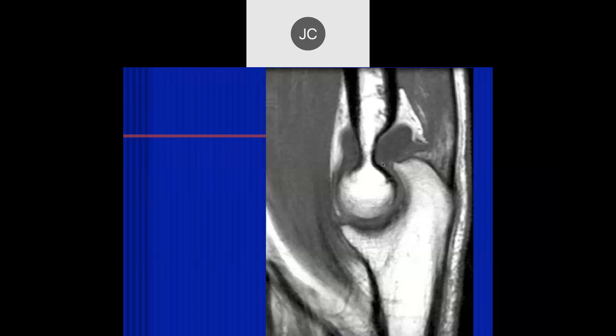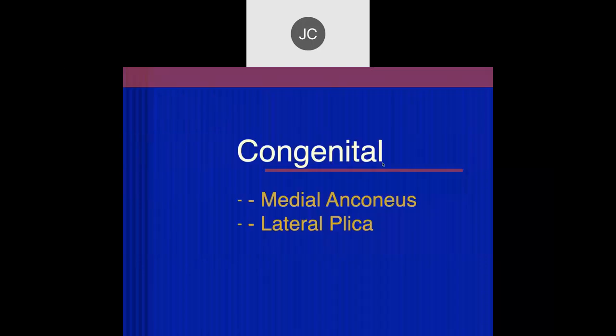On this T1 sagittal image there looks like displacement of the fat pads - a joint effusion. That's just anatomy. Let's talk about a few congenital things: one is the anconeus epitrochlearis muscle, and the lateral plica.